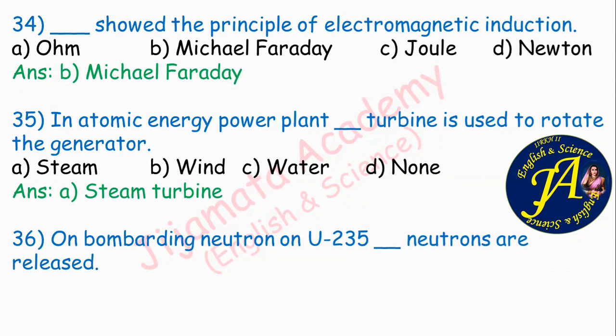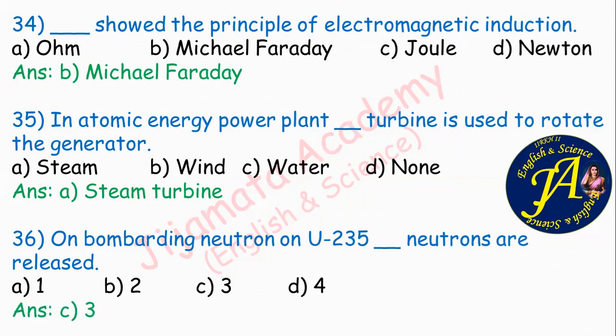On bombarding a neutron on uranium-235, dash neutrons are released. Options are 1, 2, 3, 4. The correct answer is option C: 3. When a neutron is bombarded on uranium-235, it becomes uranium-236, which is highly unstable and undergoes fission, producing barium and krypton, releasing 3 neutrons along with 200 mega electron volt of energy.